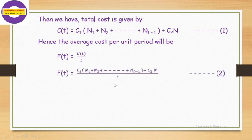Hence the average cost per unit period will be f(t) = C(t)/t — that is, this total cost divided by total time interval t. So f(t) = [C1·(n1 + n2 + ... + n(t−1)) + C2·N] / t, which is equation number 2.